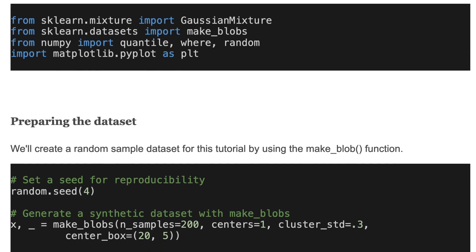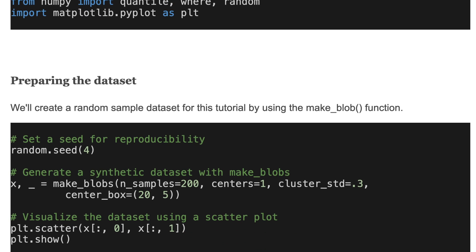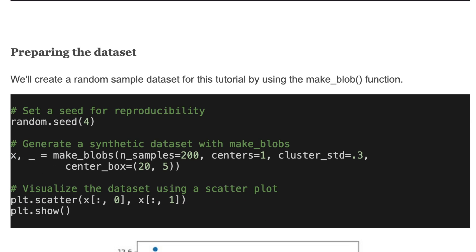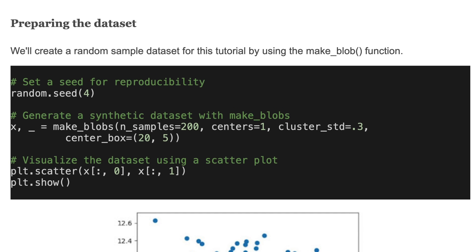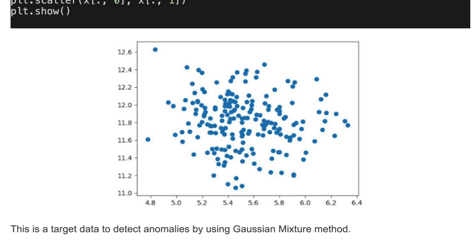We'll create a random sample dataset for this tutorial by using the make_blobs function. The code shows how to generate synthetic data and visualize it in a scatterplot. This is the target data to detect anomalies by using the Gaussian Mixture method.